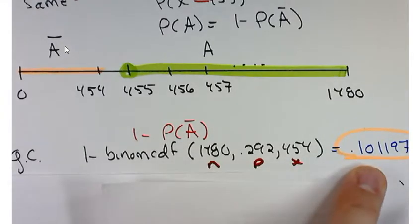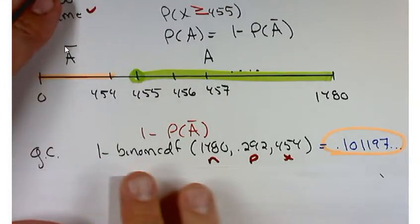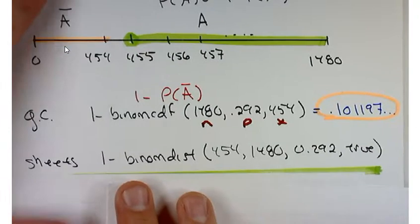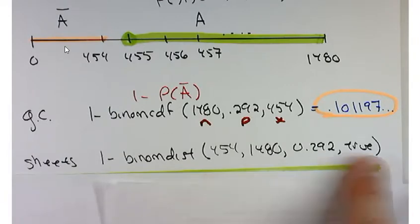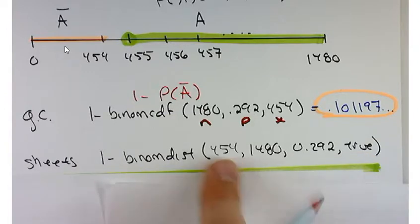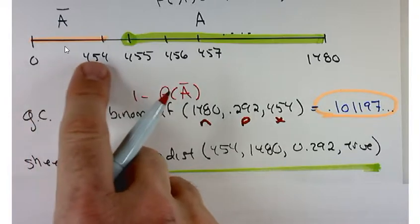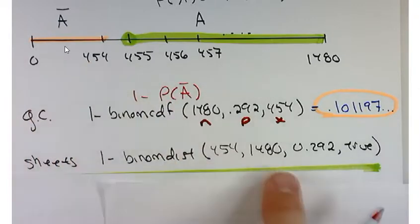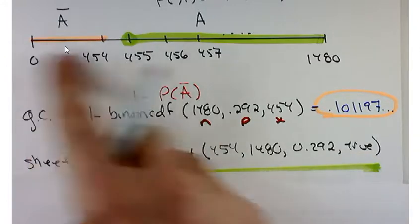And that will give you directly, let's call it 0.1012 is what that would round to. Likewise, you can do that on Google Sheets. You just got to use the binomial distribution here. Except make sure that you use true. That way it will add up all these probabilities starting at probability of x equals 0 plus probability of x equals 1 all the way up to probability of x equals 454. That's what's going to happen when you put in true.